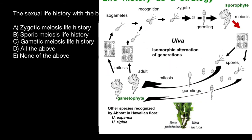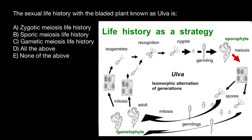Now let's talk about the life history of this alga. We even have the name of this life history here, which is isomorphic alternation of generations. But if you check the variants of the answers, you're not going to find it there, because it has an alternative name, which I will tell you in just a moment.